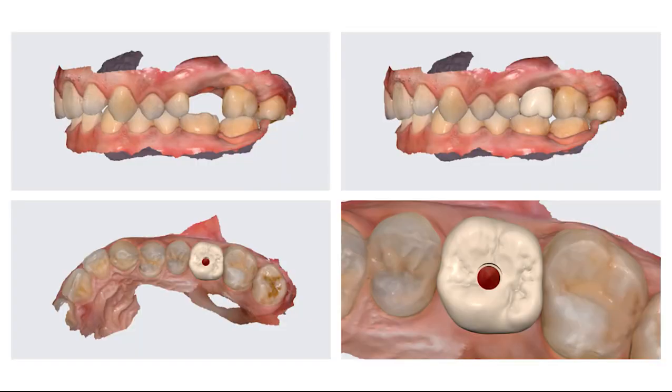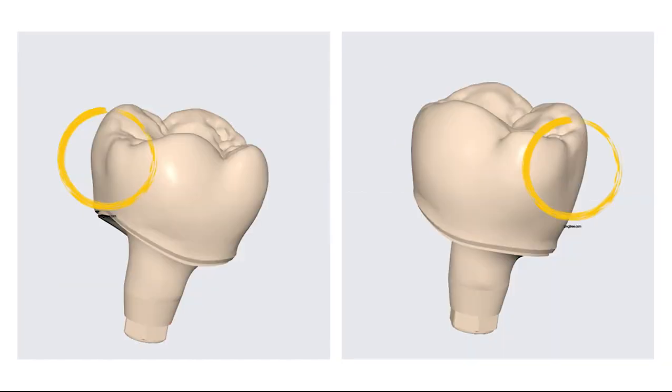This is the crown case for implant number 26. Note the shape of the contact point with number 25. If you look at the actual design, you'll see that the mesial-adjacent faces are overfilled lingually.